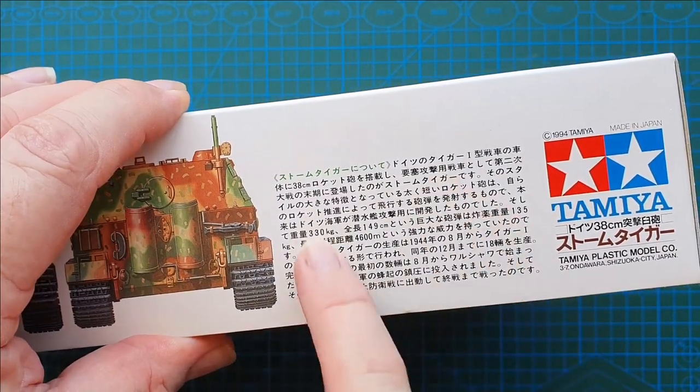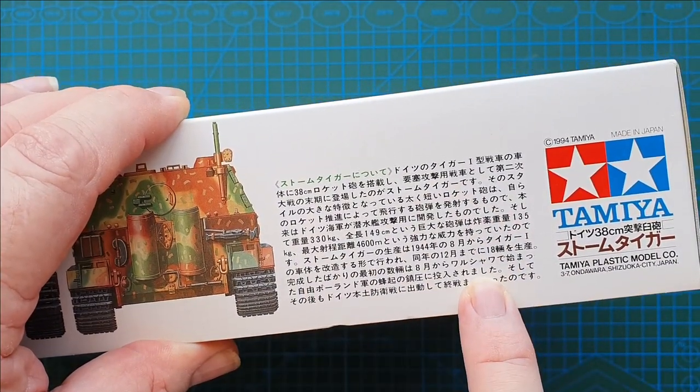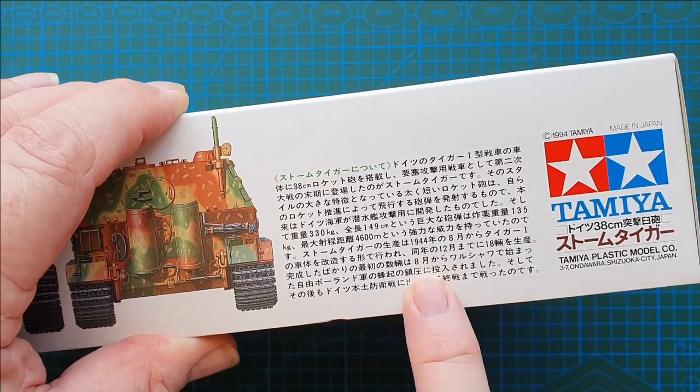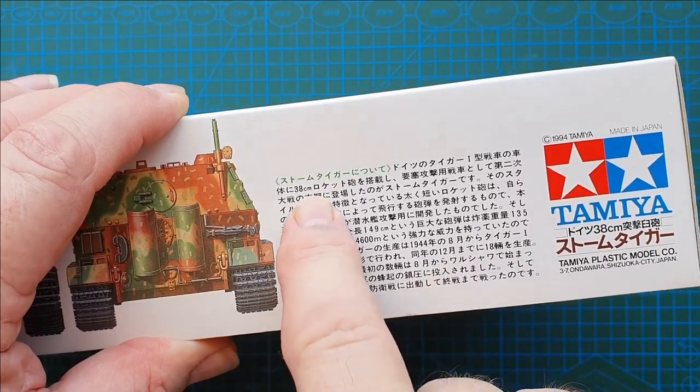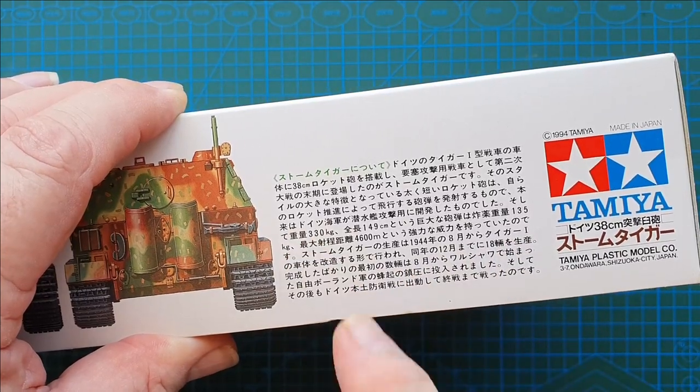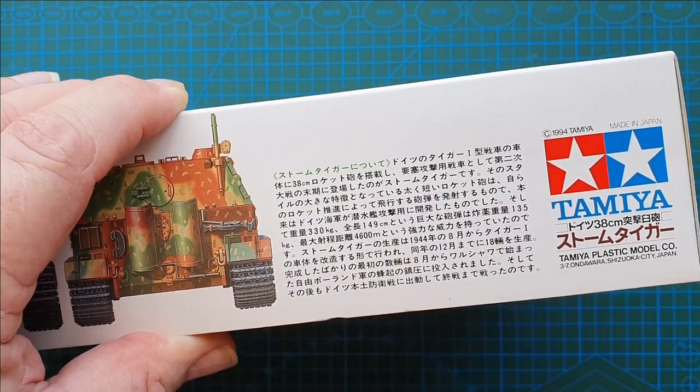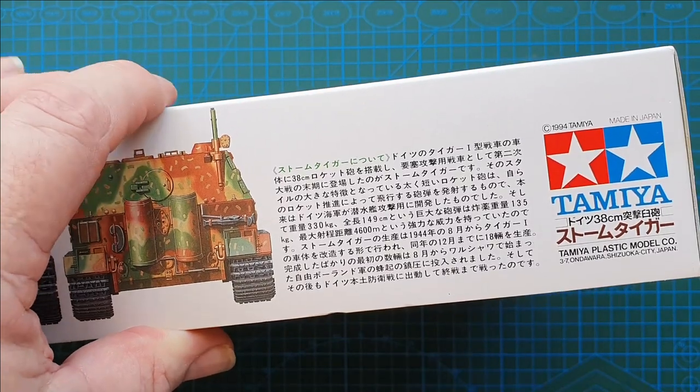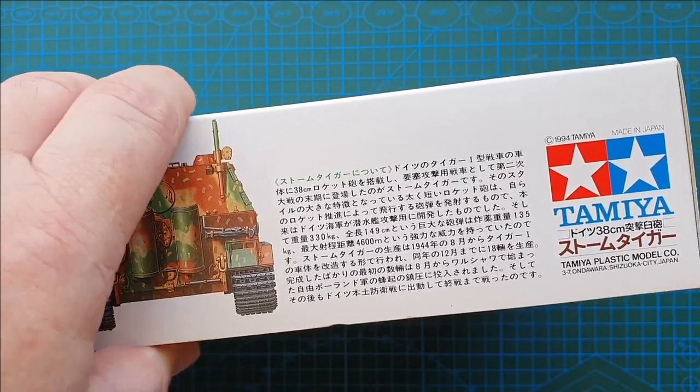This I believe is possibly the specifications in Japanese. I can't tell you exactly what it says but I can see it says 38 centimeters, so it's basic specifications and history of the vehicle.